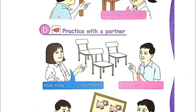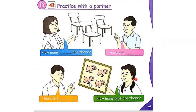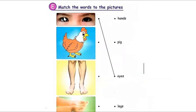There are four. How many pigs are there? Four pigs. Yeah, there are four. So he asked, Amra answer. How many? There are three chairs. How many? There are four pigs.